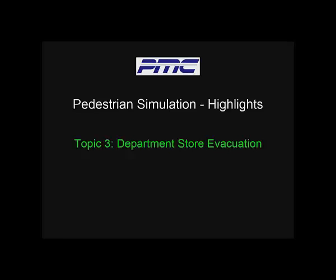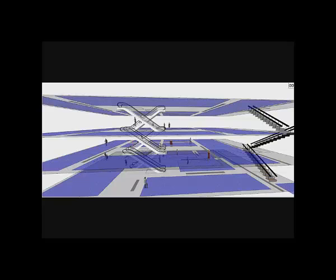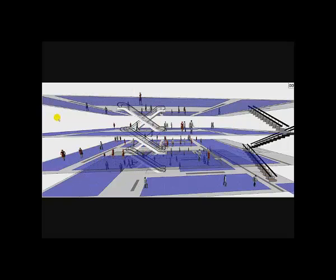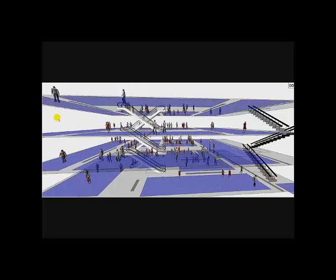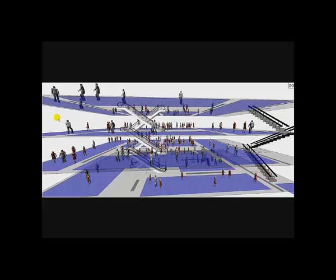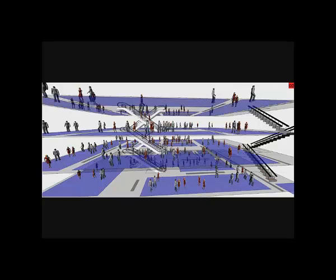Our last demo shows an emergency evacuation of a four-story department store. In the 3D view under normal conditions, pedestrians stop to shop on different floors in different departments based on an empirical distribution. Departments are defined by blue-colored rectangles on the floor. Pedestrians are only using escalators under normal conditions. The simulation is set to trigger an emergency evacuation after a simulated time of 30 minutes, at which point emergency stairs become available and pedestrians use them to evacuate as quickly as possible.